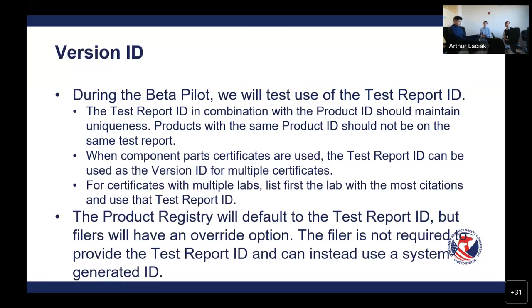My team believes that the test report ID in combination with the product ID should maintain uniqueness, since products with the same product ID that may be manufactured at different locations should not be on the same test report. That's what I learned from the last meeting, and when I asked that question in the follow-up email, many of you stated that you would prefer to use the test report ID. I also hope that this will make things easier on your end to keep track of the certificate. For clarification, when component card certificates are used, the test report ID can be used as a version ID for multiple certificates.